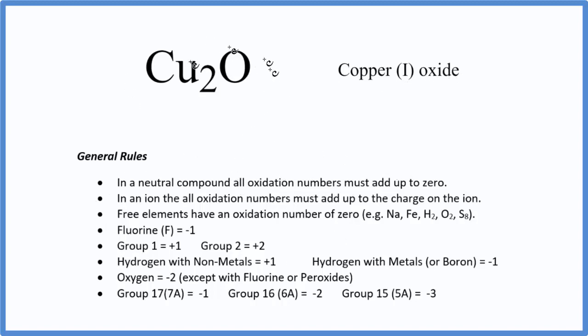As we look at this, one of the first rules is that in a neutral compound, it won't have a plus or a minus up here, just be like Cu2O. This is a neutral compound. All the oxidation numbers add up to zero, so that's going to be important.